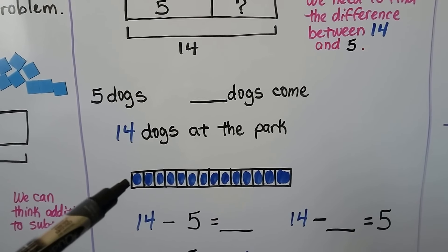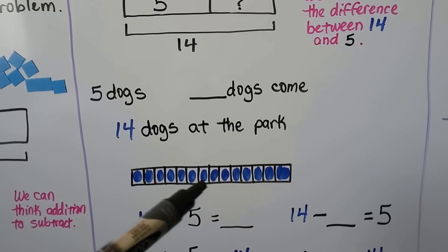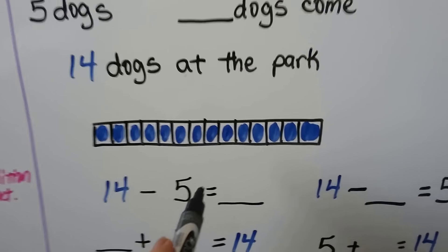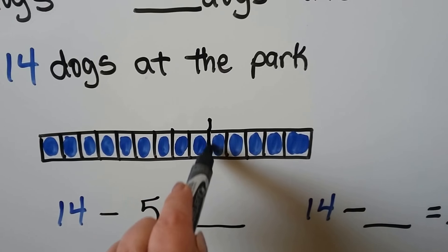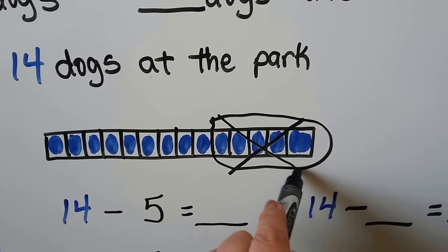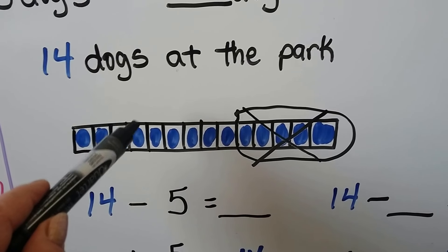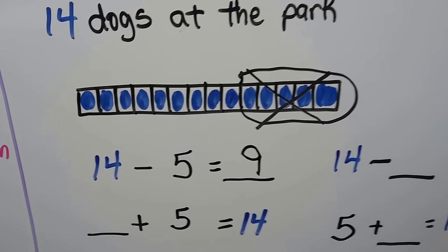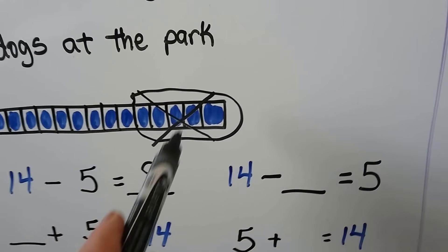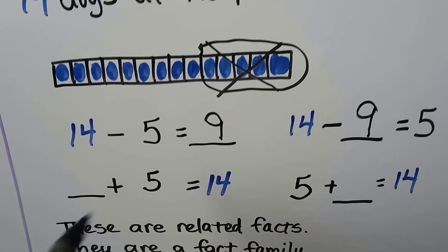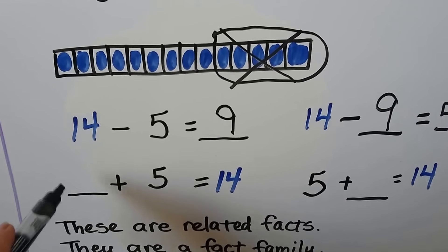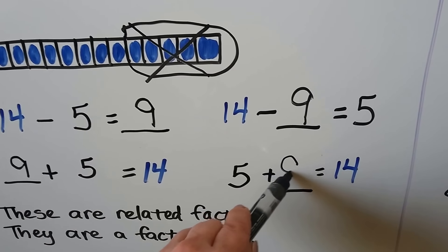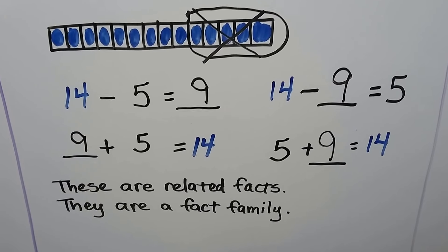We can use a bar model. We have 14 counters, and if we take 5 of these away, that's going to leave 9. 14 minus 5 is equal to 9. And 14 minus 9 is equal to 5. We can also say 9 plus 5 is equal to 14, and 5 plus 9 is equal to 14. These are related facts — they're a fact family.